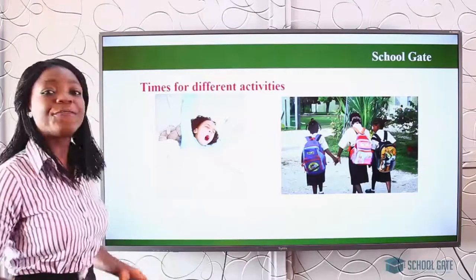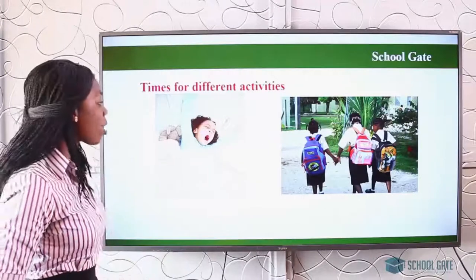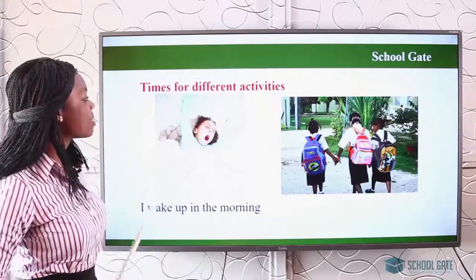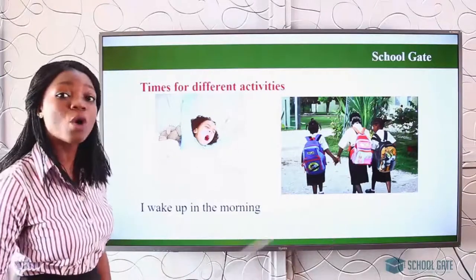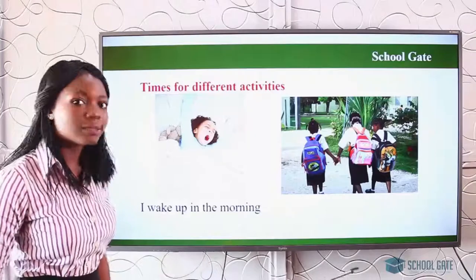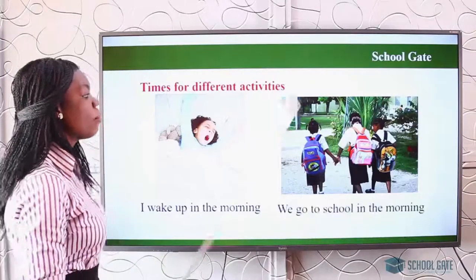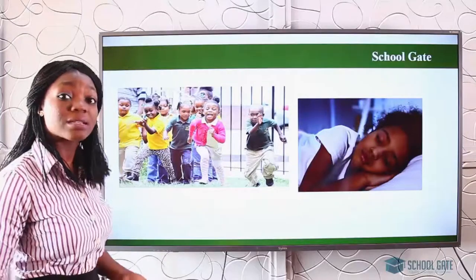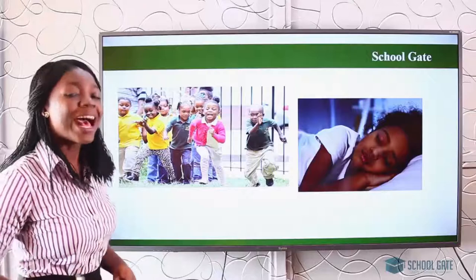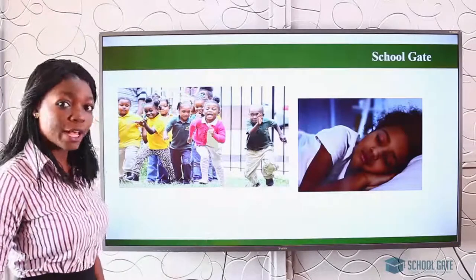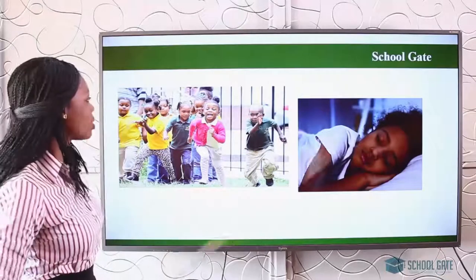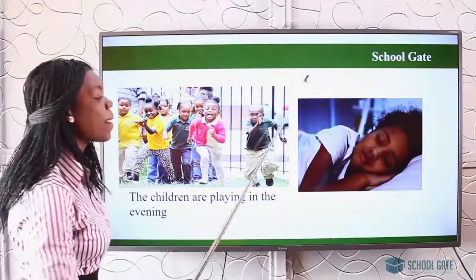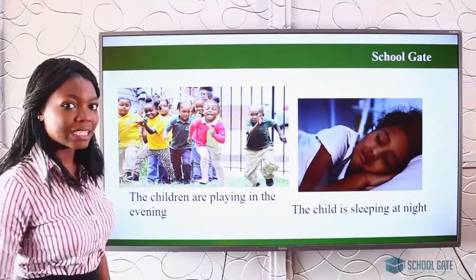Now, we have time for different activities. You wake up in the morning — see this girl waking up in the morning. See these kids going to school in the morning. You go to school in the morning, not in the afternoon. See these kids playing. You play during weekends — that's Friday, Saturday, or Sunday — or when you come back from school after you have done your homework. They are playing in the evening. You don't play in the morning when you want to go to school. And we sleep at night.